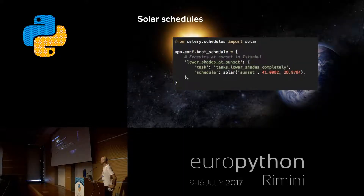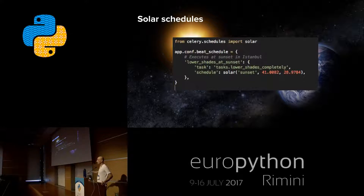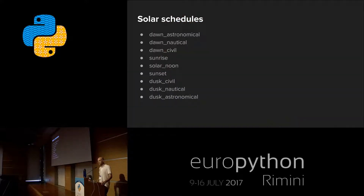There are also solar schedules. If you want to fire tasks based on the position of the earth and sun, you can use this. For example, if you want to fire a task at sunset in Istanbul, you can give solar, sunset, and the coordinates of Istanbul — and it will send a new task at the exact moment of sunset in Istanbul. There are different types: dusk civil, dusk nautical, dusk astronomical. If you have time, you can check all of these and find the best one.